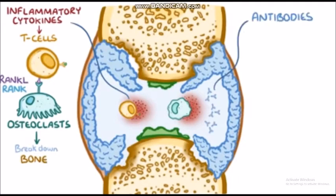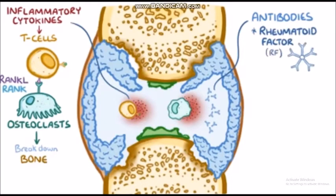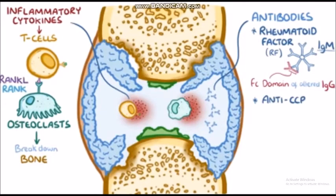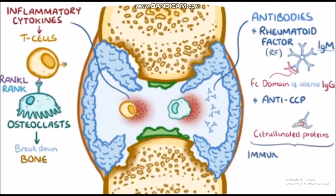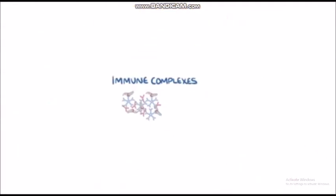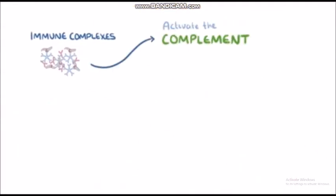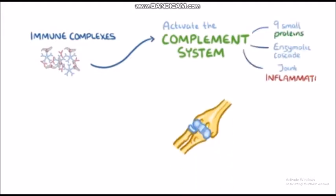Meanwhile, antibodies also enter the joint space. One antibody is called rheumatoid factor, or RF, which is an IgM antibody that targets the constant Fc domain of altered IgG antibodies. Another antibody is anti-cyclic citrullinated peptide antibody, or anti-CCP, which targets citrullinated proteins. When these antibodies bind to their targets, they form immune complexes which accumulate in the synovial fluid. There, they activate the complement system — a family of nine small proteins that work in an enzymatic cascade to promote joint inflammation and injury.